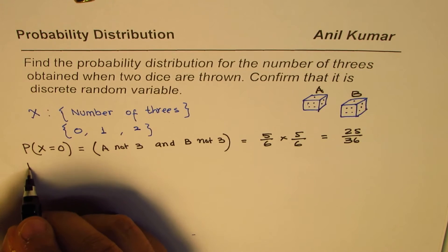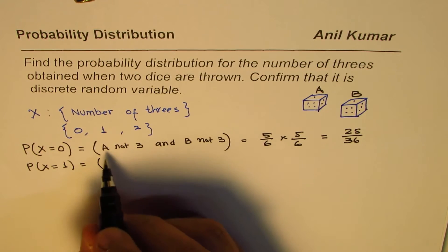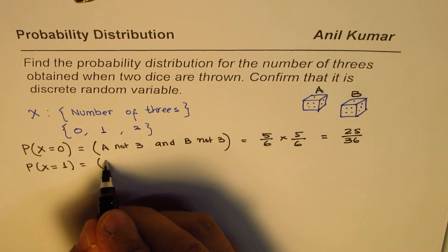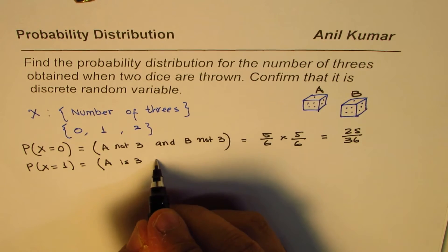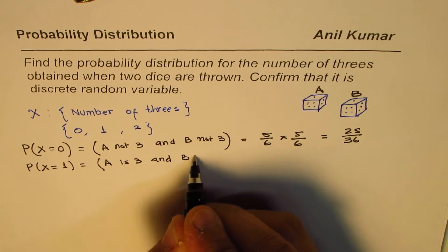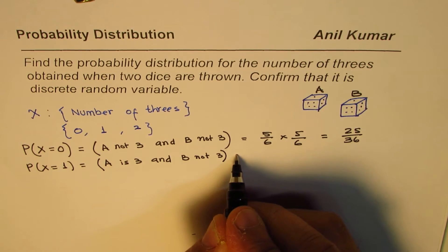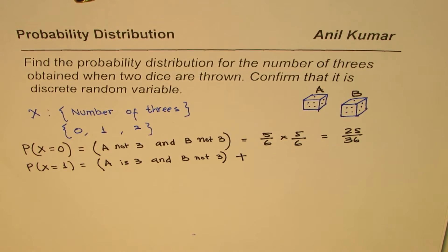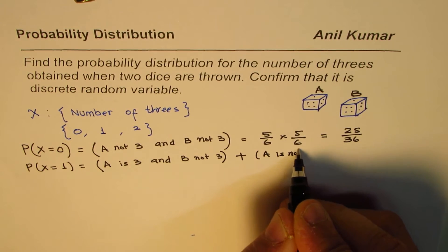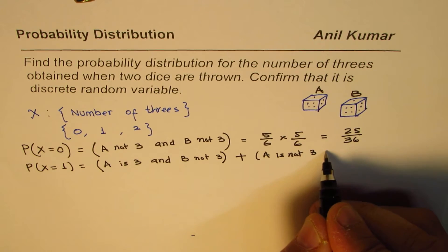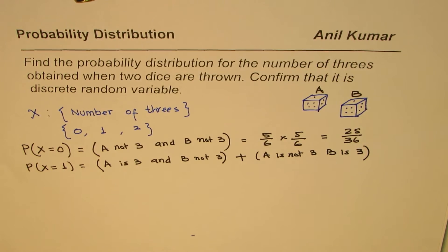Now for P(X = 1), that means exactly one die shows three. There are two cases: first, A is three and B is not three; or second, A is not three and B is three. Adding these two cases ensures exactly one die shows a three.